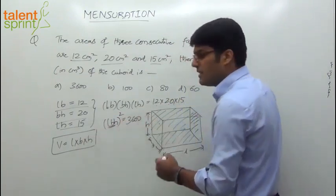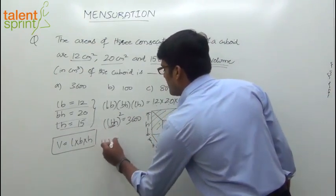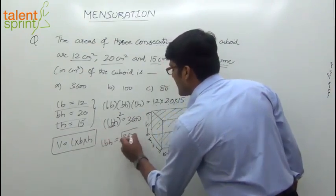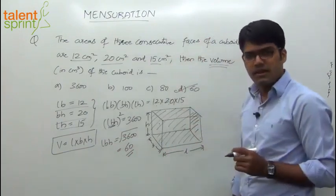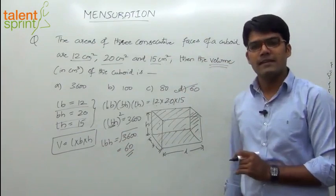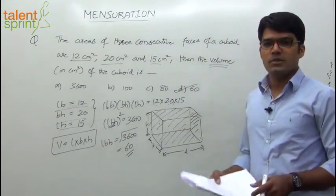But what we need is LBH. So we can say LBH will be the square root of 3600, which is 60. 60 centimeter cube, which is option B. So simple - multiply all three values and take the square root of them to get the answer. That's it, thank you, take care.